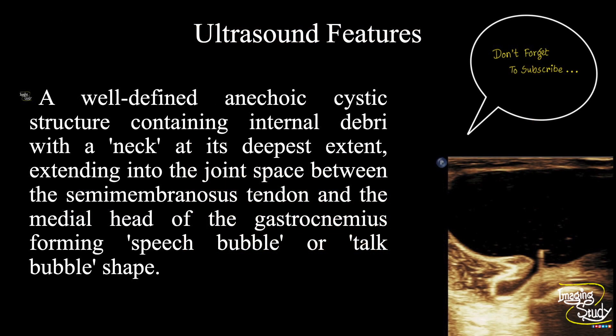In summary: a well-defined anechoic cystic structure containing internal debris, with a neck at its deepest extent extending into the joint space between the semimembranosus tendon and the medial head of gastrocnemius, forming a speech bubble or talk bubble shape — suggesting Baker cyst.